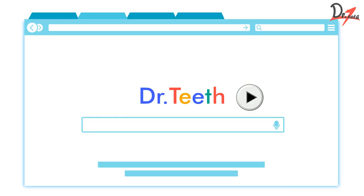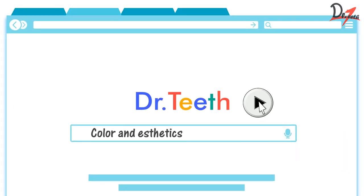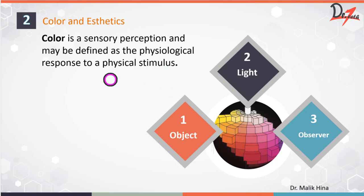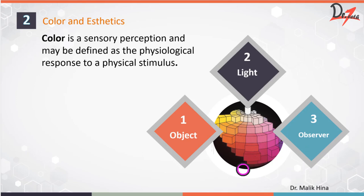In this video, we are going to cover color and aesthetics: the basics of color, physiology of color, and the three coordinates of color — the hue, value and chroma. We will also cover the two color systems: the Munsell color system and the CIE color system. In the next video, we will be covering some of the popular shade guides.